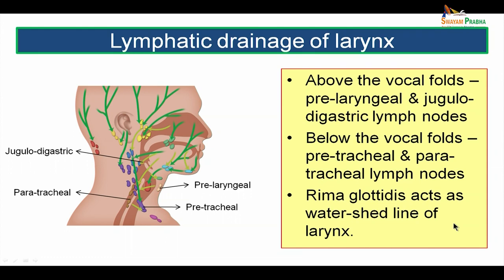The lymphatic drainage of larynx: above the vocal folds the lymph drains into the pre-laryngeal and jugulodigastric lymph nodes. Below the vocal folds it drains into the pre-tracheal and paratracheal group of lymph nodes. The rima glottidis thus acts as a watershed line of the larynx.